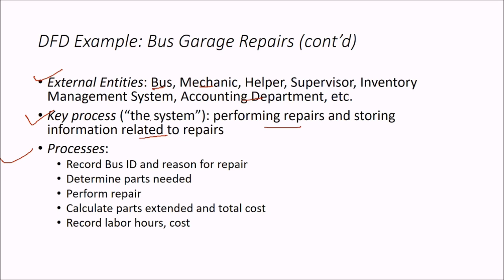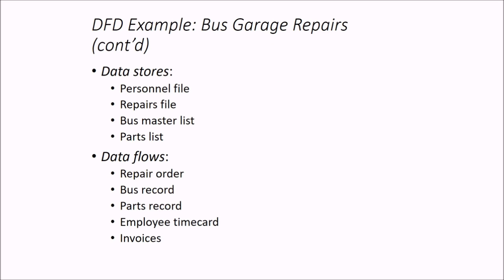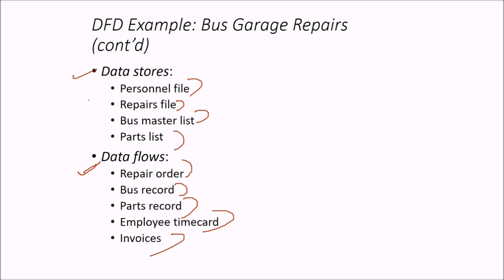The external entities are: bus, mechanic, helper, supervisor, inventory management system, and accounting department. The key process — the system — is to perform the repairs and store the information related to the repairs. The processes from the problem statement are: record bus ID and reason for repair, determine the parts needed, perform the repair, calculate the parts extended and total cost, and record the labor hours and cost. The data stores are: personal file, repairs file, bus master file list, and parts list. The data flows are: repair order, bus order, part order, and employee time card invoices.